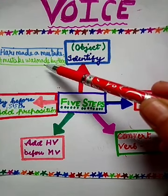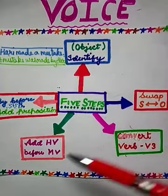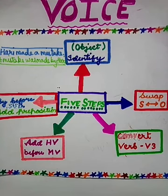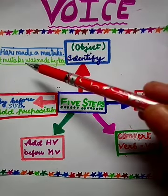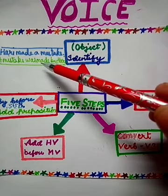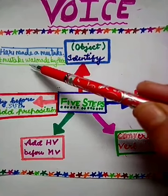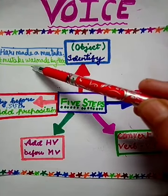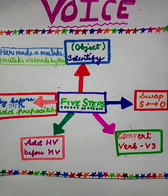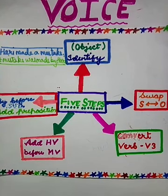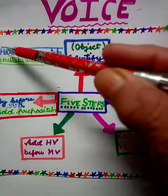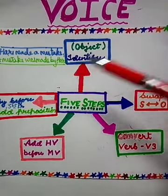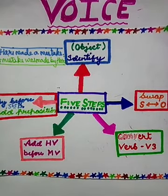So we have used the third form of the verb: 'made.' Step four: add a helping verb before the main verb. According to the chart, you have to use a helping verb here before the main verb. This sentence is in simple past, so 'was' is used because 'a mistake' is singular — the verb 'was' is used according to the subject. Step five: use the preposition 'by' before the subject. Now, since 'Hari' has become the object, you have to use 'by' before 'Hari.' So these are the five steps to change active voice to passive voice.